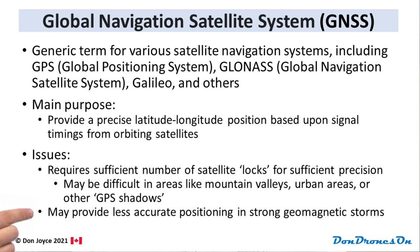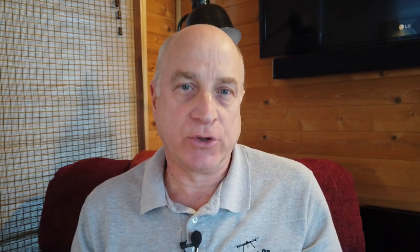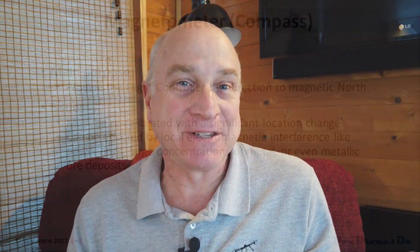Also, during strong geomagnetic storms, the time signals from the satellites can be distorted, resulting in inaccuracies. Let's look at a couple of other crucial sensors. First is the magnetometer, or simply put, the compass.